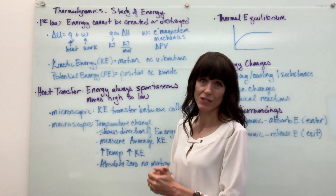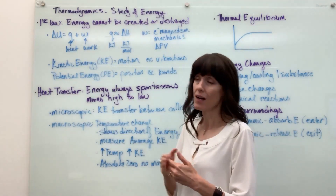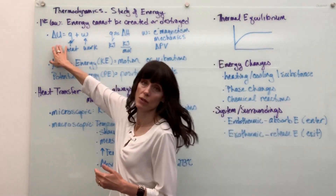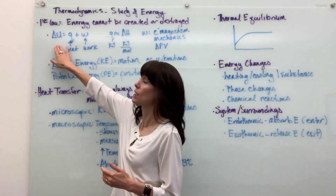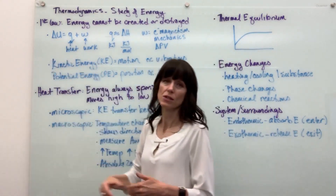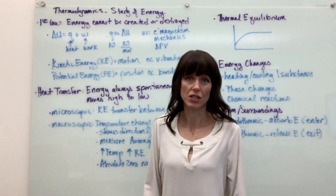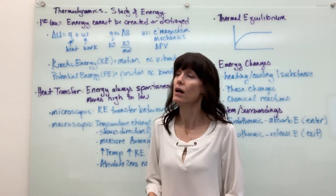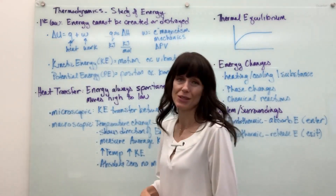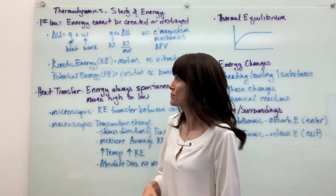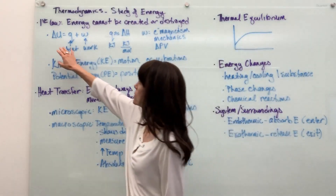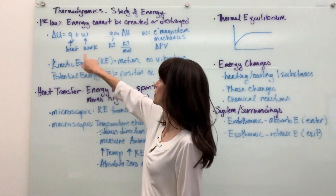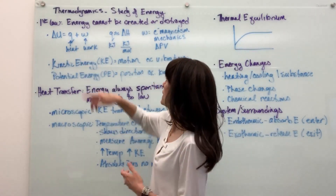Now talking about energy and the first law, we have delta U equals Q plus W. Delta U is a way of saying change of energy — you could put delta E there as well, but we typically use U. So change of energy equals Q, which is heat, and W, which is work.